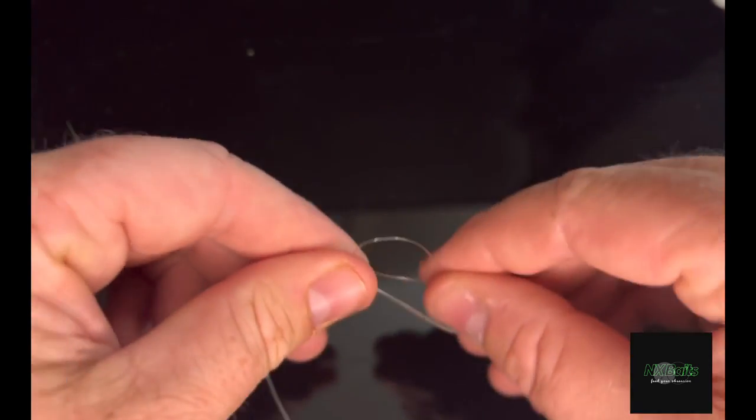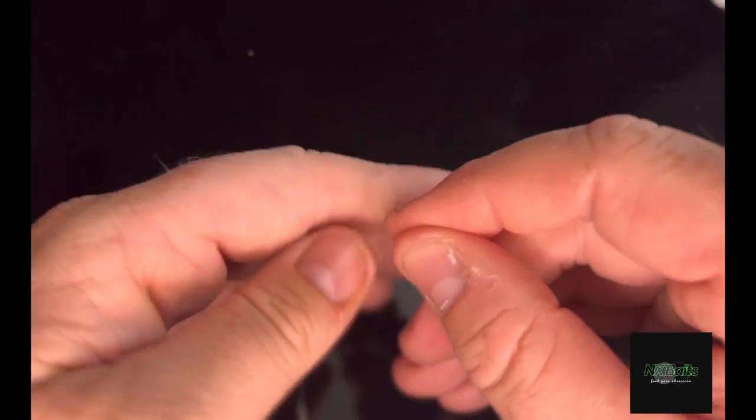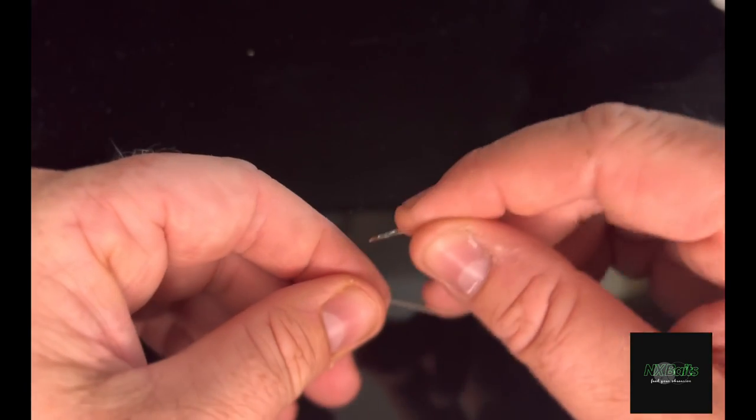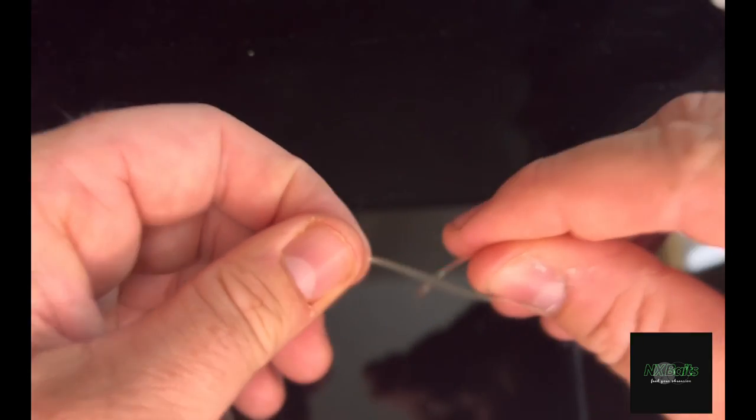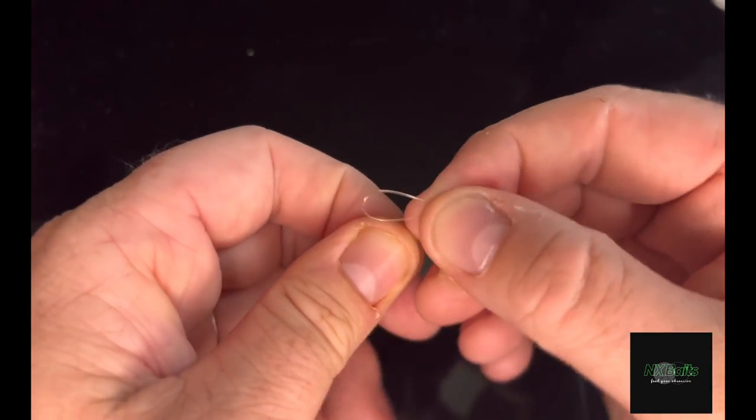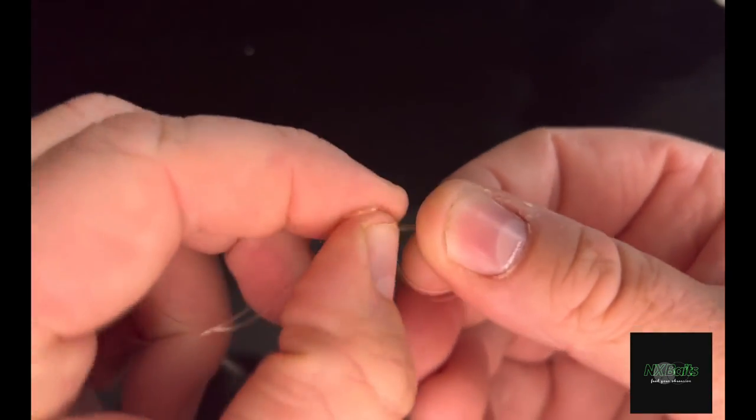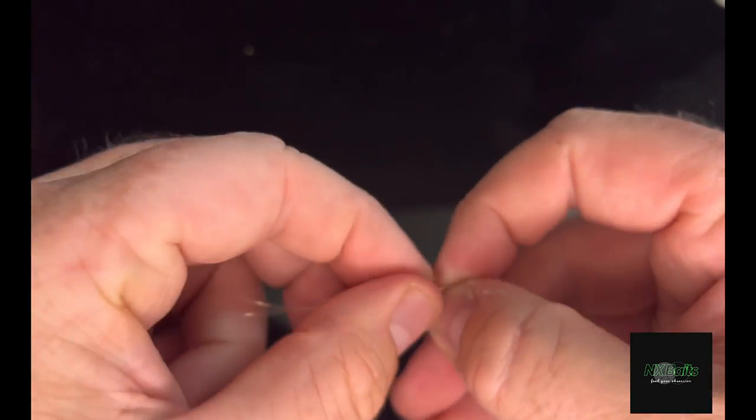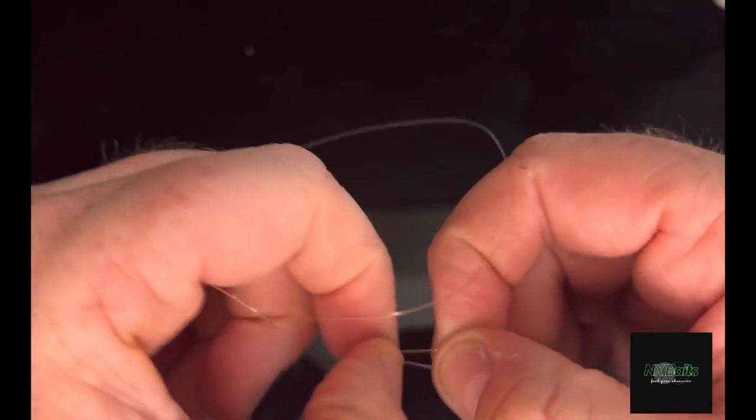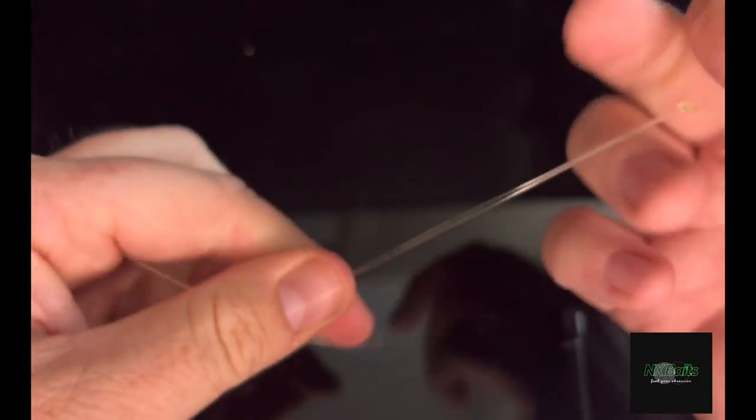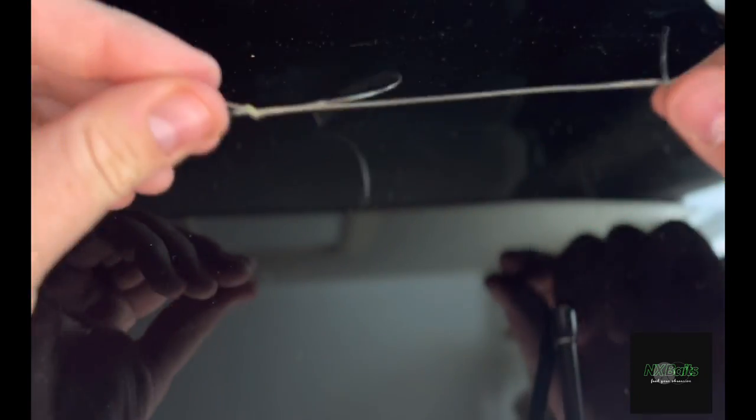All we're going to do is take that loop, go around the back, and go through the loop here. So there we go, that's our figure of eight loop done. Now bear in mind this is bristle filament so it's a bit easier for you to see. I'm just going to chop off some of this line so it's a bit easier to see. There we go.